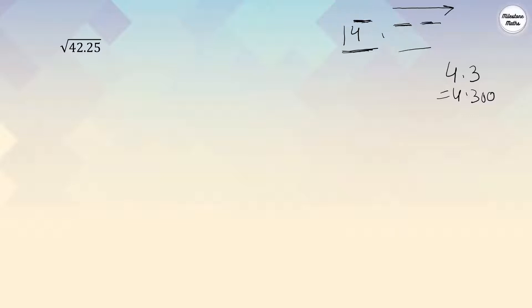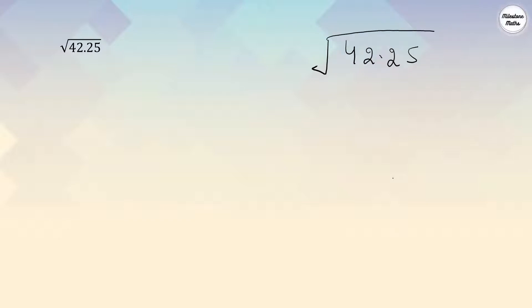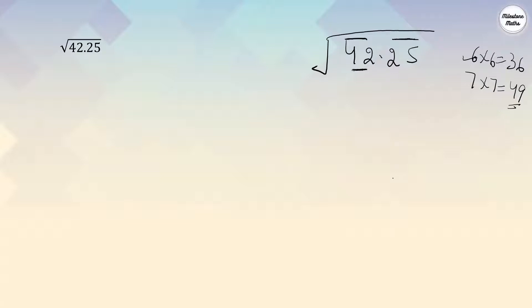Now let's find the square root of 42.25. First step: put the bars. We put a bar on 42, and for the decimal part starting from 2 going right we put a bar on 25. Now we need to find a number whose square is near 42. Since 6×6=36 and 7×7=49, which is greater than 42, we take 6. So 6×6=36 is our divisor.